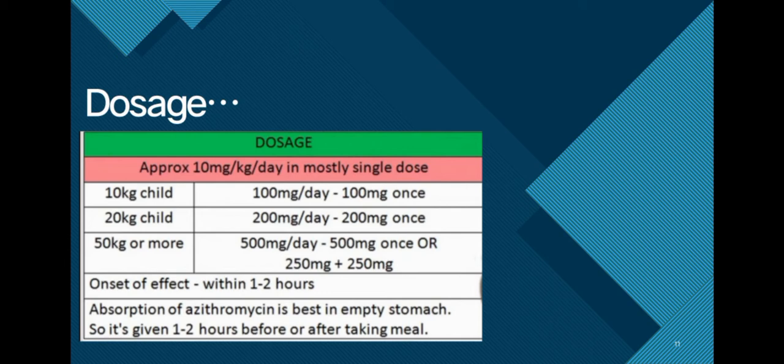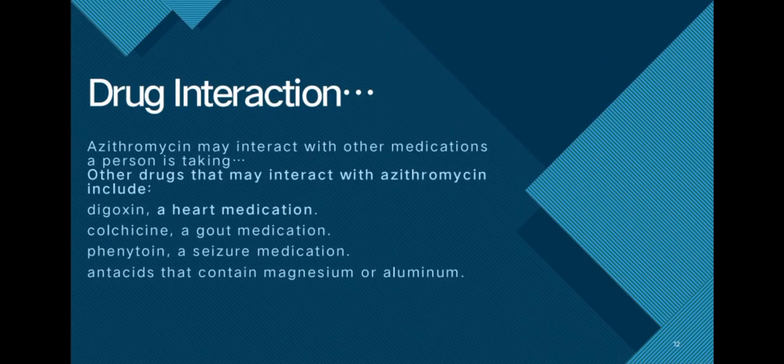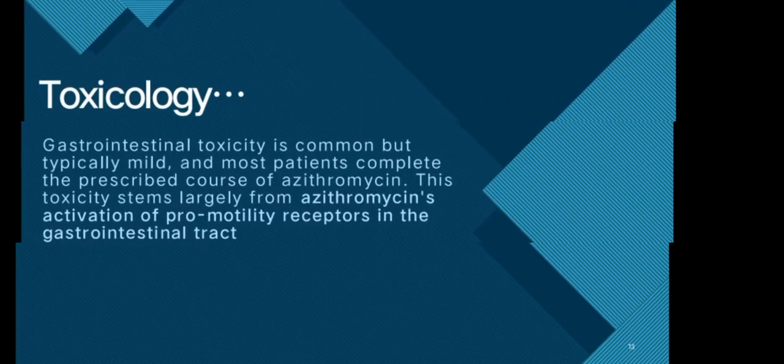Then moving towards the drug interaction: as we know if we take a drug it may or may not interact with other drugs in the stomach that we have taken before. So we also need to keep in mind that if we take azithromycin, we need to know which drug it will interact with. These are some drugs listed below that azithromycin can interact with, for example antacids having magnesium or aluminum, and then digoxin, that is a heart medication.